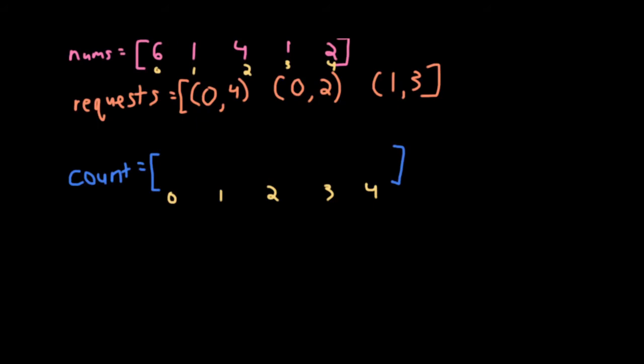The crux of this problem really comes down to figuring out an efficient way to keep track of how many times each index appears in the requests. One way you could do it, and this is an inefficient way and I'll say why in a second, is you could look at one request at a time and process it. So for example, in this first request, from 0 to 4, it means index 0, 1, 2, 3, and 4 all appear, which means I can keep track of the count on those values. Then I'll look at my next request, and it's 0, 2, which means 0, 1, and 2 all get an additional count. And then my final request is 1, 3, so I'll go 1, 2, 3, like this, and that's processed.